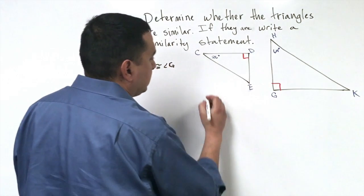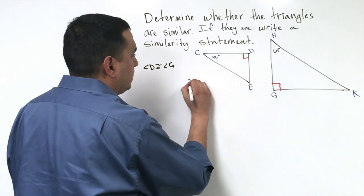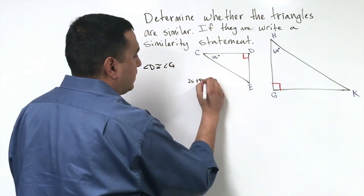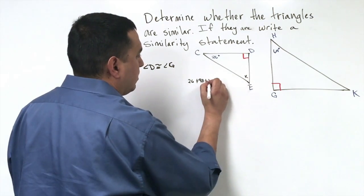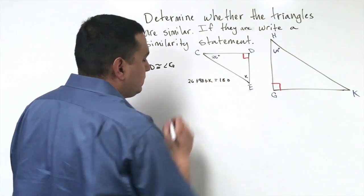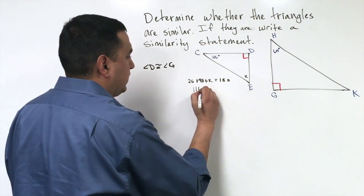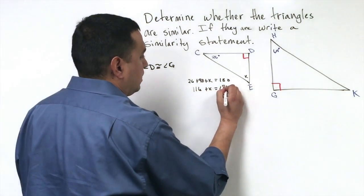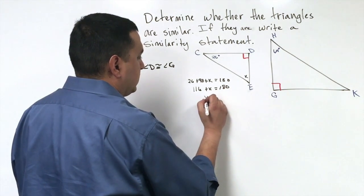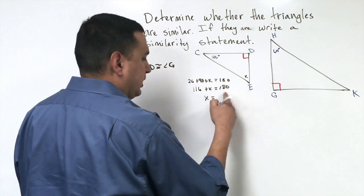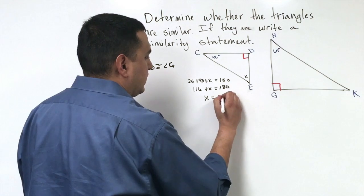But because it is a triangle, I know all the angles have to add up to 180. So I have a 26 and 90. So I know that I can do 26 plus 90, plus this missing angle here, we'll call that X, has to equal 180. So if I add 26 and 90, that gives me 116. And if I subtract the 116 from the 180, I get that X is 64.